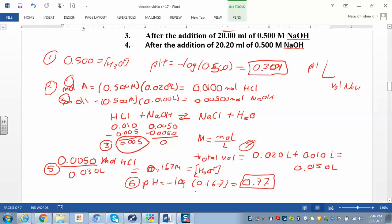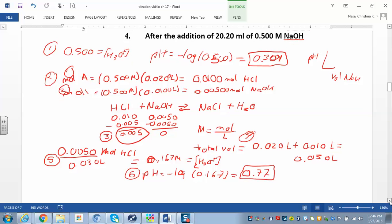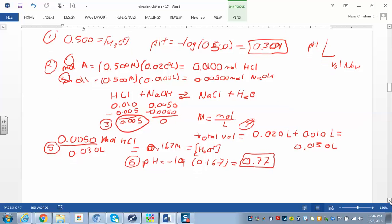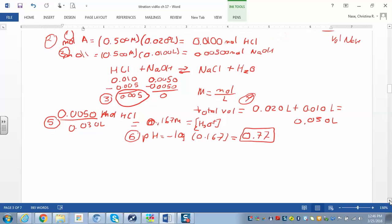Okay, so now we're going to step number three here. Step number three, we're looking at the addition of 20 mils of 0.5 molar NaOH. Whenever you don't know where we are in this titration, you should calculate the moles of the acid and the moles of the base, and that'll tell you.